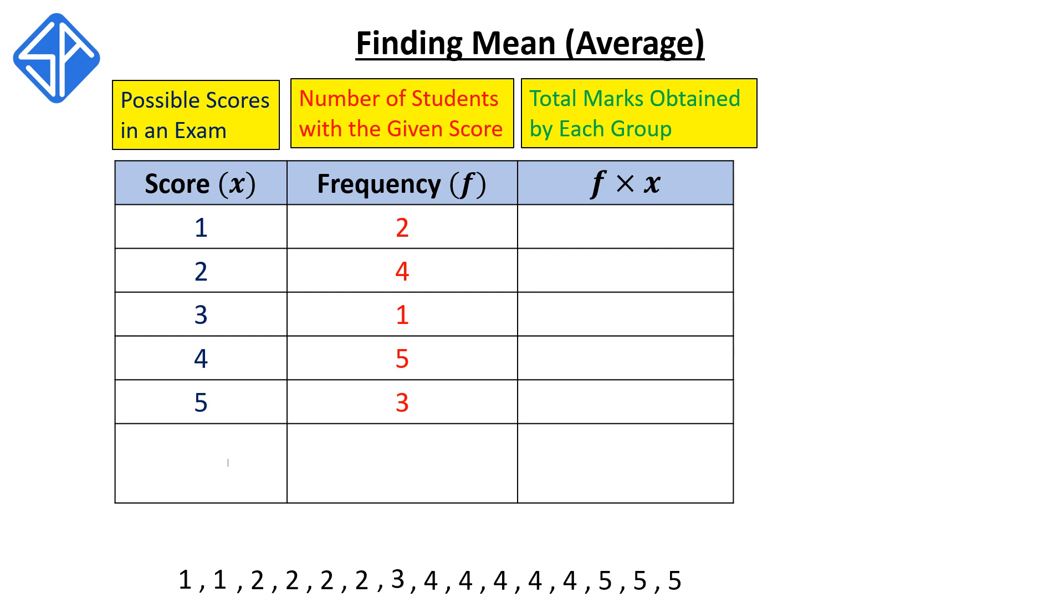For example, the first row, 2 times 1 is equal to 2. This means that these two students with a score of 1 contribute a total mark of 2 to the class.